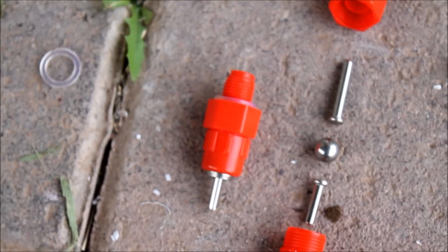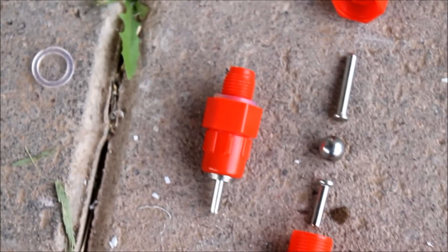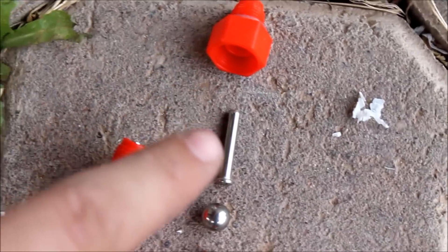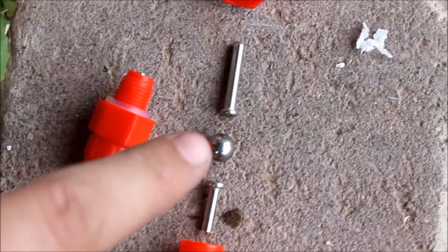This is what one looks like normally. Here's one taken apart: here's the top part with the threads, there's a little bar and a ball bearing that act as the seal.